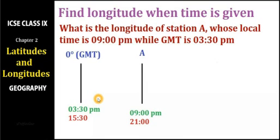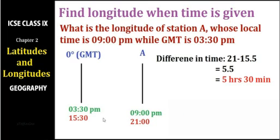In the previous type of question we found the longitudinal difference when we had two longitudes. Here instead we have two times, so the first step is to find the difference in time. The difference is 21 hours minus 15.5 hours, which equals 5.5 hours, or 5 hours 30 minutes. That is the time difference between the two given stations.